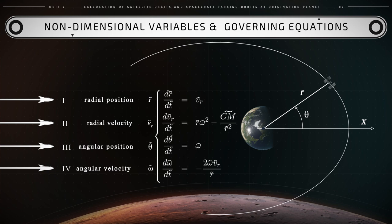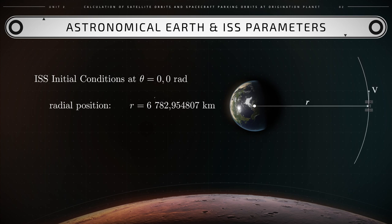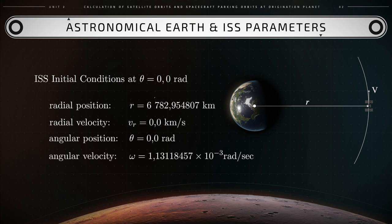The non-dimensional initial conditions are determined from dimensional magnitudes as follows. From NASA's Horizon system for the flight of the International Space Station, for instance, we obtain the following initial conditions: r equals 6,782.95 km, vr equals 0 km per second, theta equals 0 radians, and omega equals 1.13 times 10 to the negative 3 radians per second. Also from the Horizon system, we obtain the magnitude of GM, the gravitational parameter of Earth, which is 3.986 times 10 to the fifth kilometers cubed per second squared.